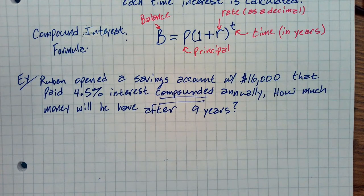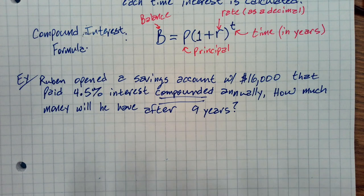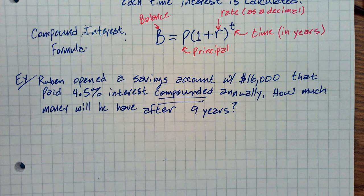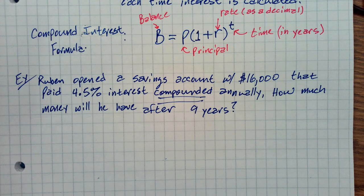We want to know how much total money will he have after nine years. We have our formula. Will our formula give us the answer just if we plug in the numbers and work it out? If we plug in the numbers into this formula, it's going to give us an answer for B. Is that what we want? Do we want the balance? Yeah, we do, actually. So this formula is exactly what we want.